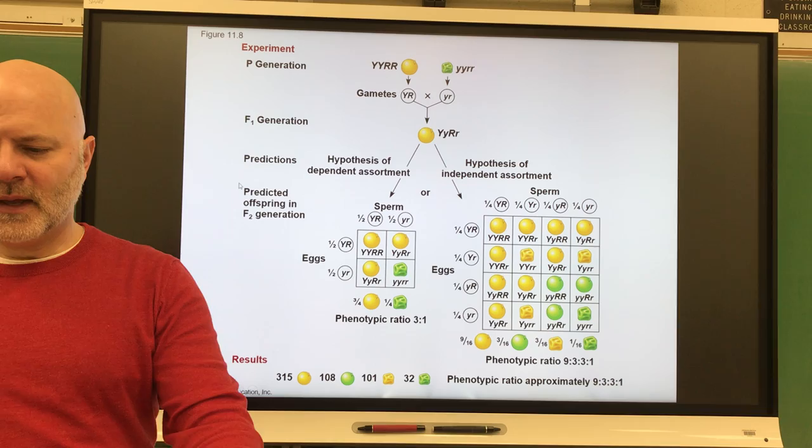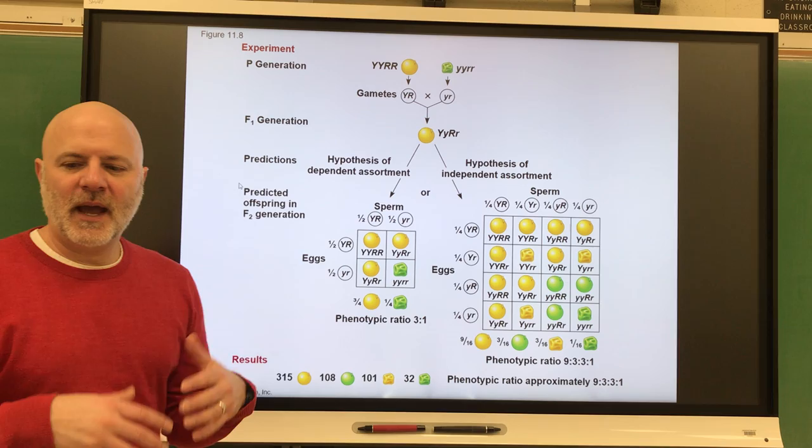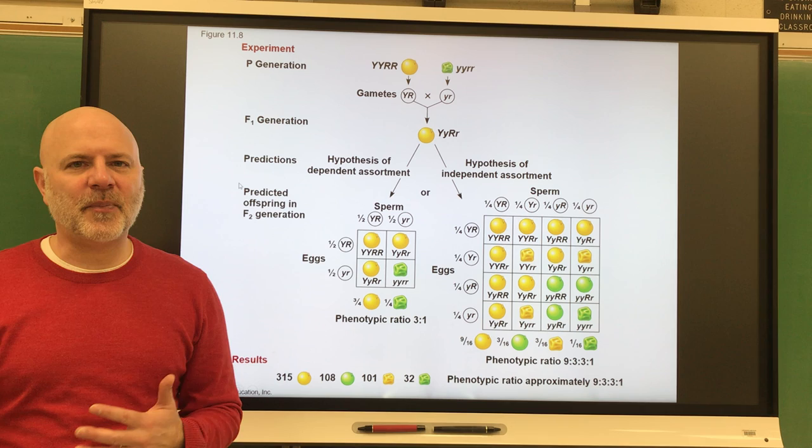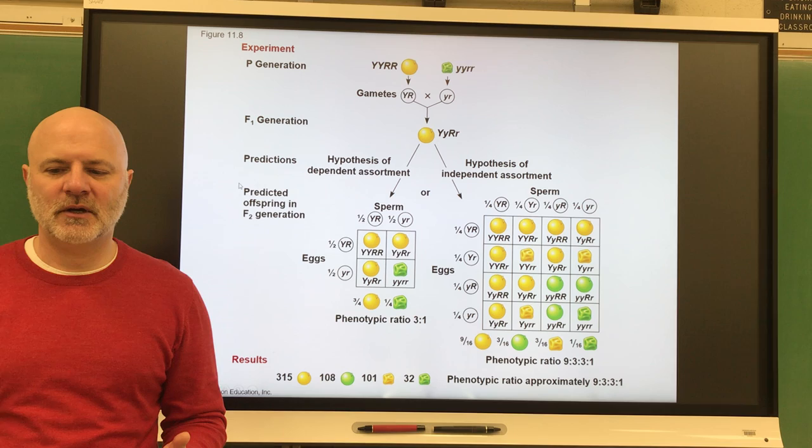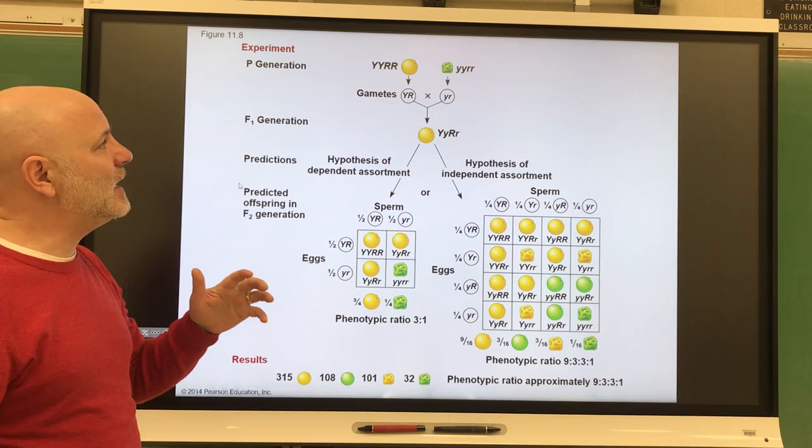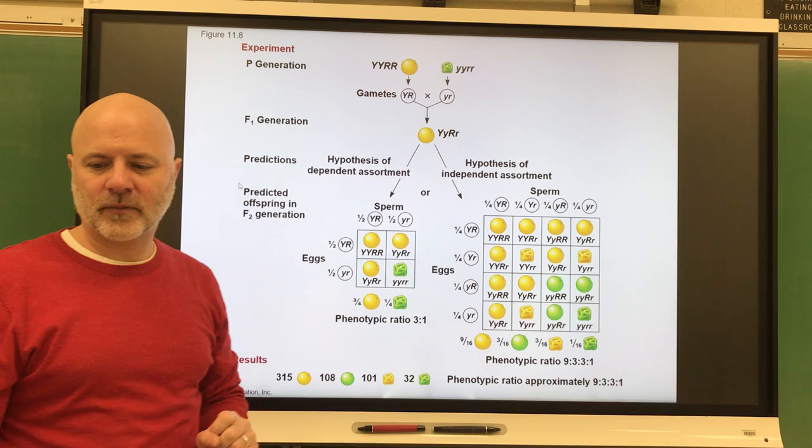When he got this phenotypic ratio, he had to think about how this could occur. And he came up with what is known as the principle of independent assortment. It says that during gametic formation, members of one pair of genes separate independently of members of another pair of genes, so that all combinations of genes occur in the gametes. So, members of one pair of genes, the yellow versus green seed color, are going to separate independently of members of another pair of genes, seed shape, round or wrinkled. That's what this principle of independent assortment says.